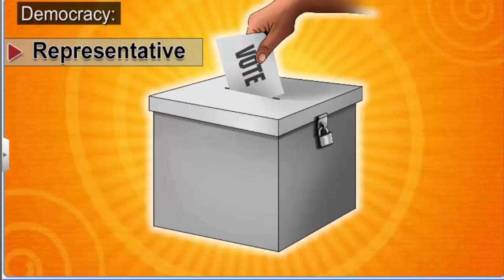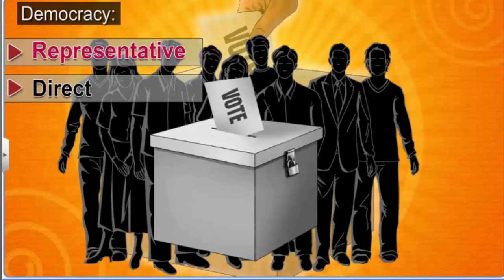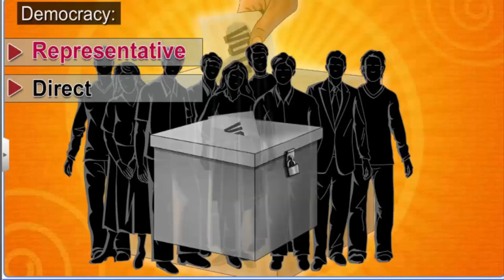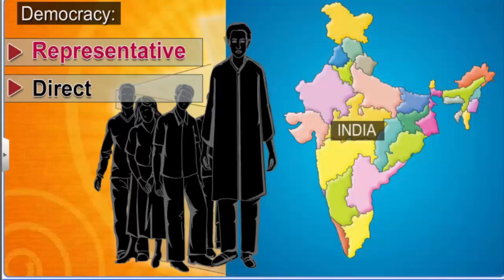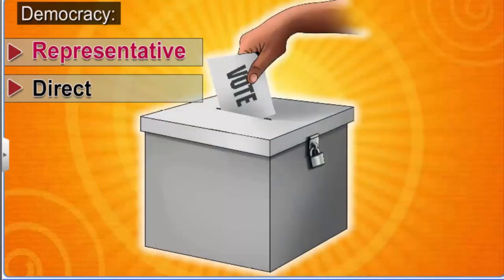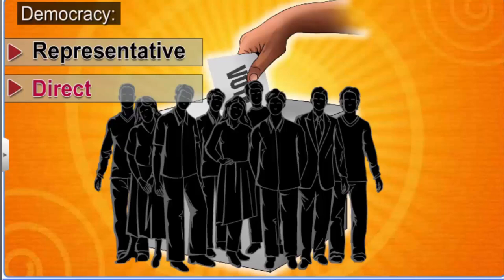Democracy can be of several types; however, the two main types are representative democracy and direct democracy. In representative democracy, the people elect individuals to represent them, and these representatives are given the authority to rule the country. India is a representative democracy. In contrast, in a direct democracy, citizens participate in decision-making personally rather than relying on intermediaries or representatives.